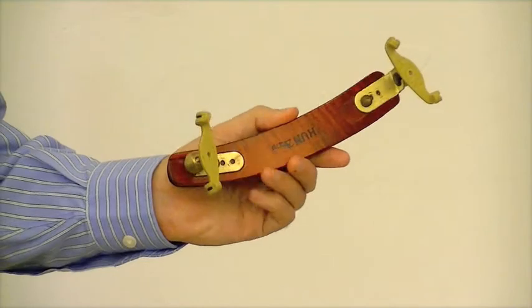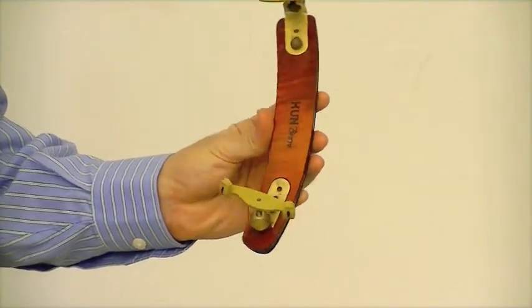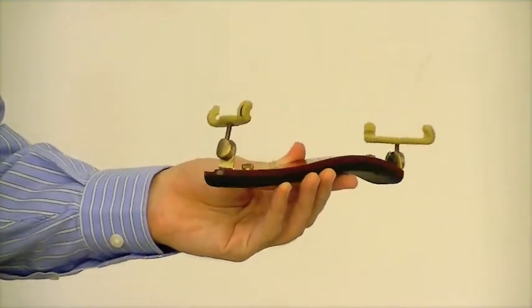A shoulder rest is an adjustable device which supports the violin up on your shoulder and prevents it from slipping away.